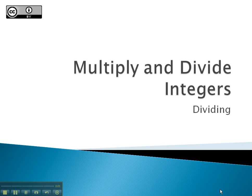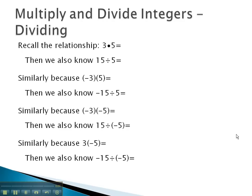In this video, we're going to take a look at how we can divide with integers or negative numbers. To set this up, I want to recall a relationship that we know from arithmetic. If we've got a problem like 3 times 5, which we know to be 15, we can write the problem in reverse as a division problem: 15 divided by 5, and the answer's going to be that other number, 3.